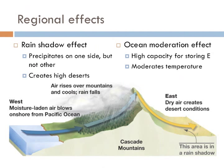Another important regional effect is known as the ocean moderation effect. Water has a tremendous capacity for storing energy. Because of this, areas near oceans can absorb a great deal of heat from the atmosphere in the summer, when the water temperature is cooler than the air temperature. The ocean also releases heat to the atmosphere in winter, when the water temperature is warmer than the air temperature. As a result, coastal areas have much more moderate climates than inland areas.